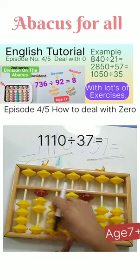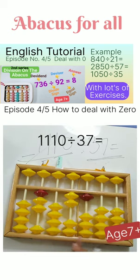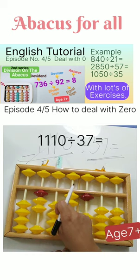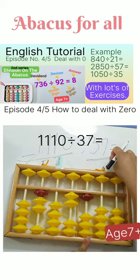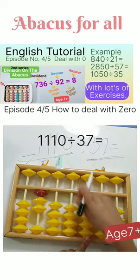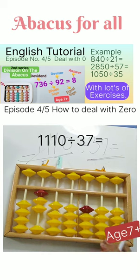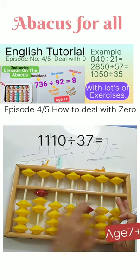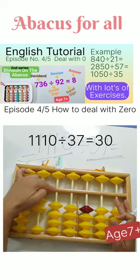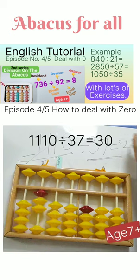Reduce nine from here. We borrow this ten to reduce nine. Change your finger — three sevens are 21. Change your finger. No more dividend on the abacus, and thirty is your answer.